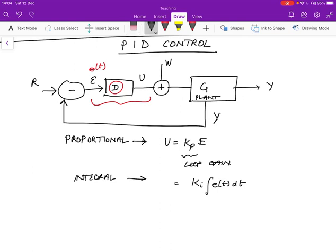And then u of s is going to be ki e over s, because this is the Laplace transform of the integral. This is 1 over s, and that's what we have for the integral. And so what's happening here intuitively is that we're taking the cumulative error that has happened over time. And if this cumulative error is non-zero, then we are going to take some control action depending on the value k sub i.